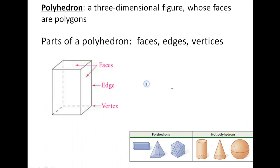Okay, so here we have again our polyhedron, and the definition of polyhedron is any three-dimensional figure whose faces are polygons.